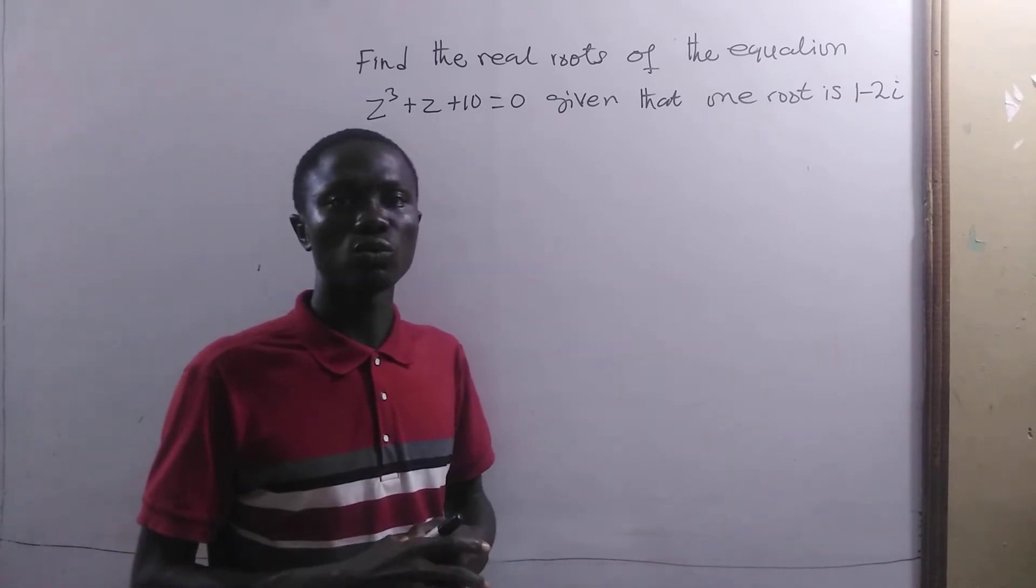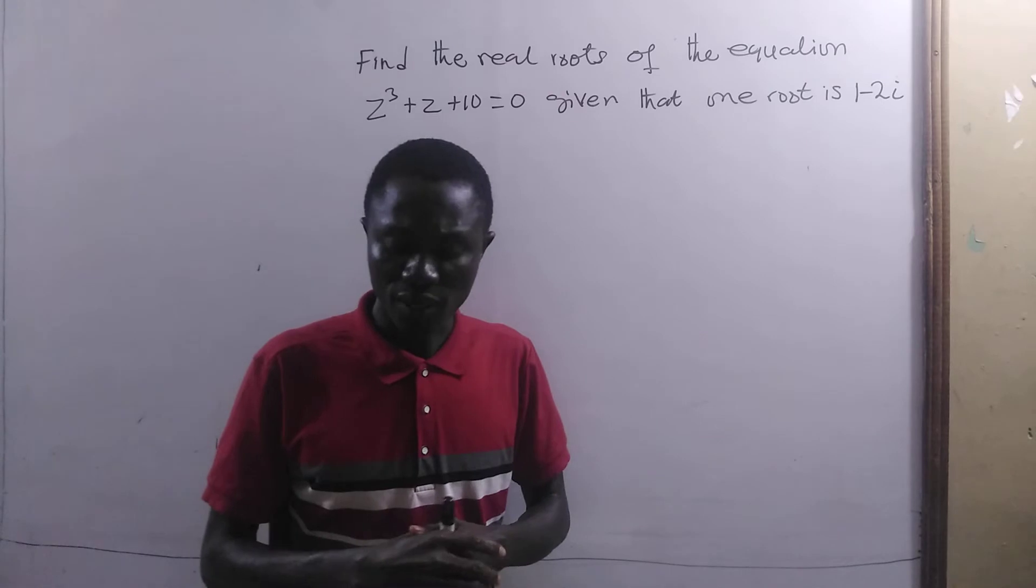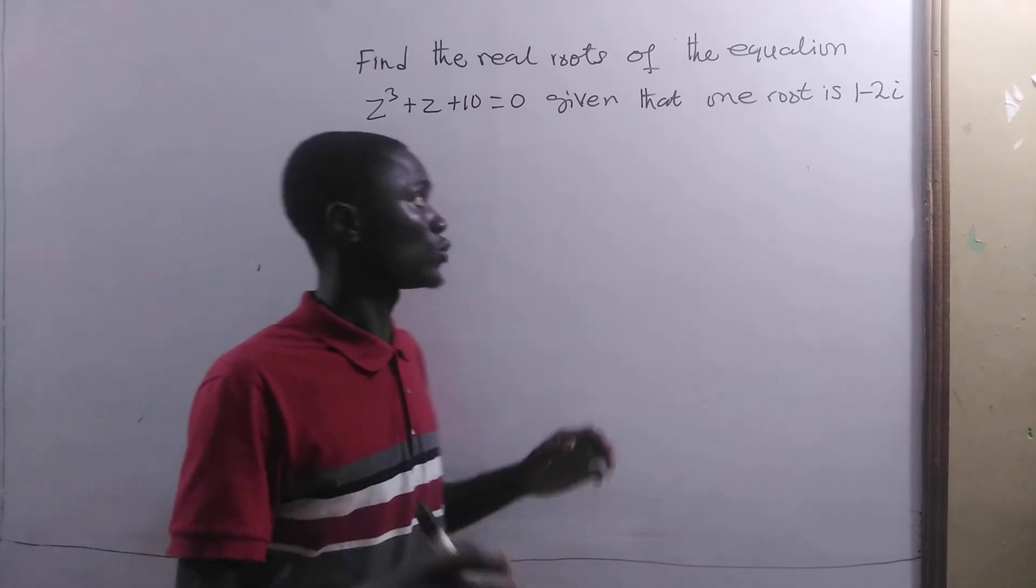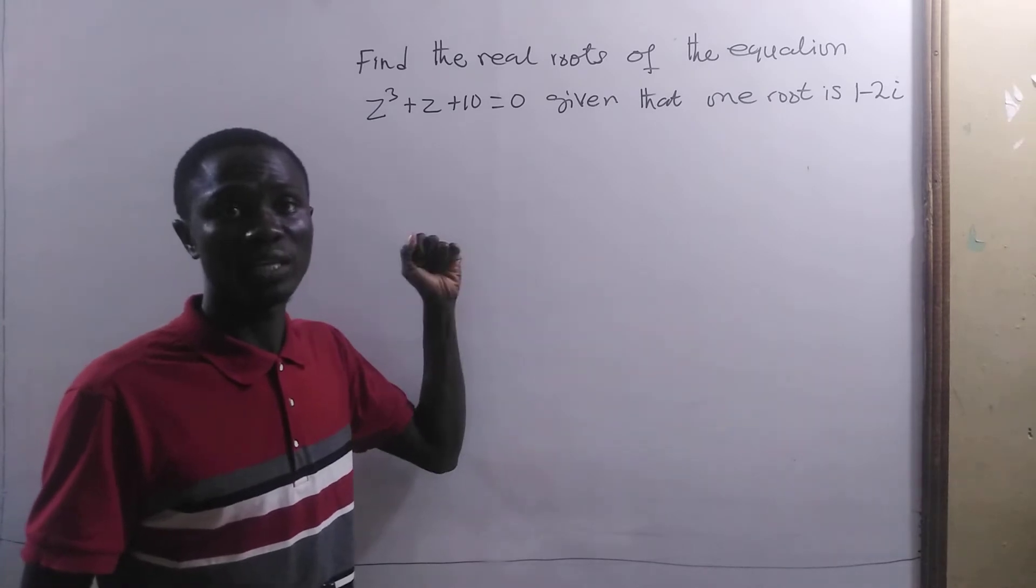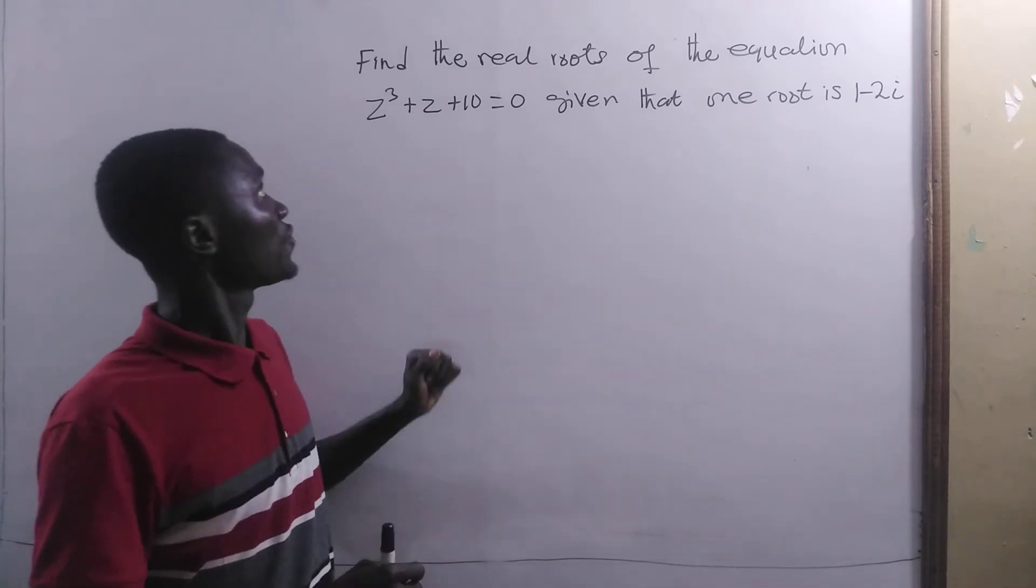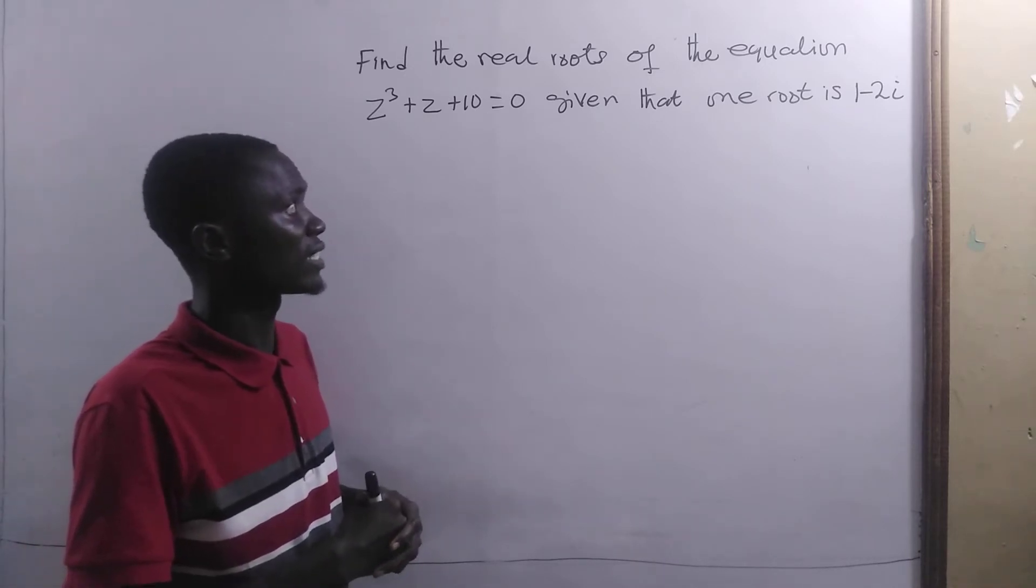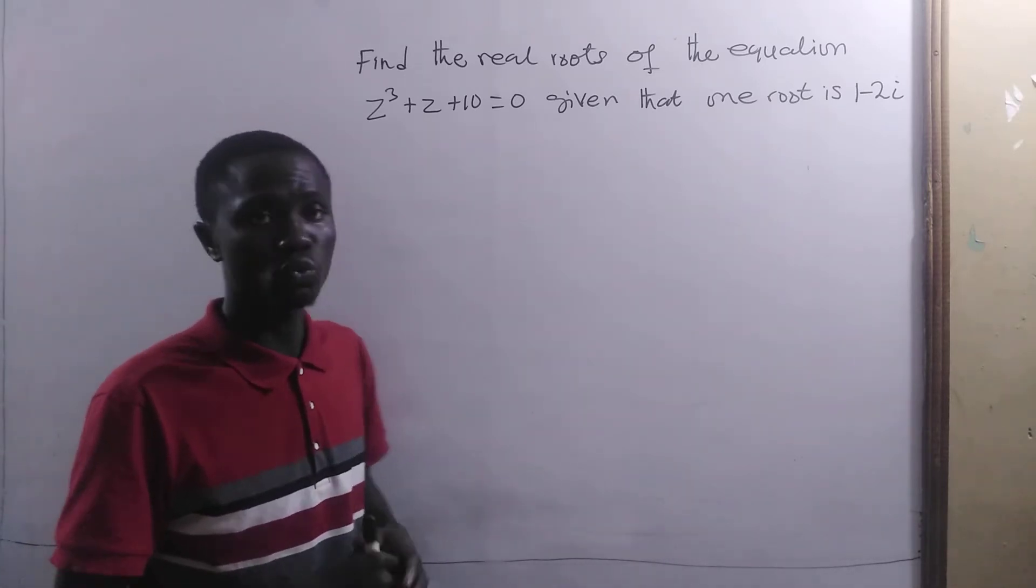In this lesson, we will be looking at how to solve a polynomial equation with real coefficients. Thanks to Ibn Zabohan from the University of Ghana-Legon for sending me these questions. Find the real roots of the equation z³ + z + 10 = 0, given that one root is 1 - 2i.